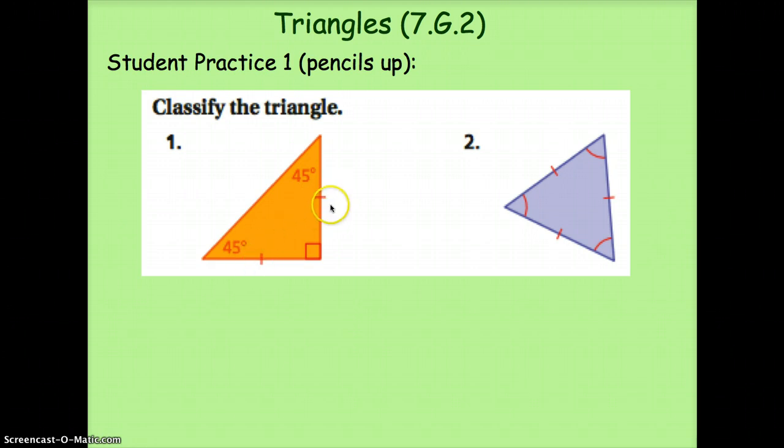We have two angles that are the same size, and we have one angle that has a box in it. Remember that box means that it is a right angle.